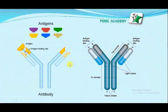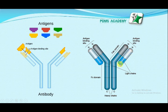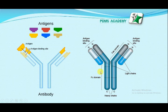Looking at the antibody diagram: this is the heavy chain of the antibody, and the two chains attached are called light chains. The light chains contain two parts — the upper part is variable while the lower part is constant. The upper variable part is the antigen-binding site, while the heavy chains are attached to each other by disulfide bonds.